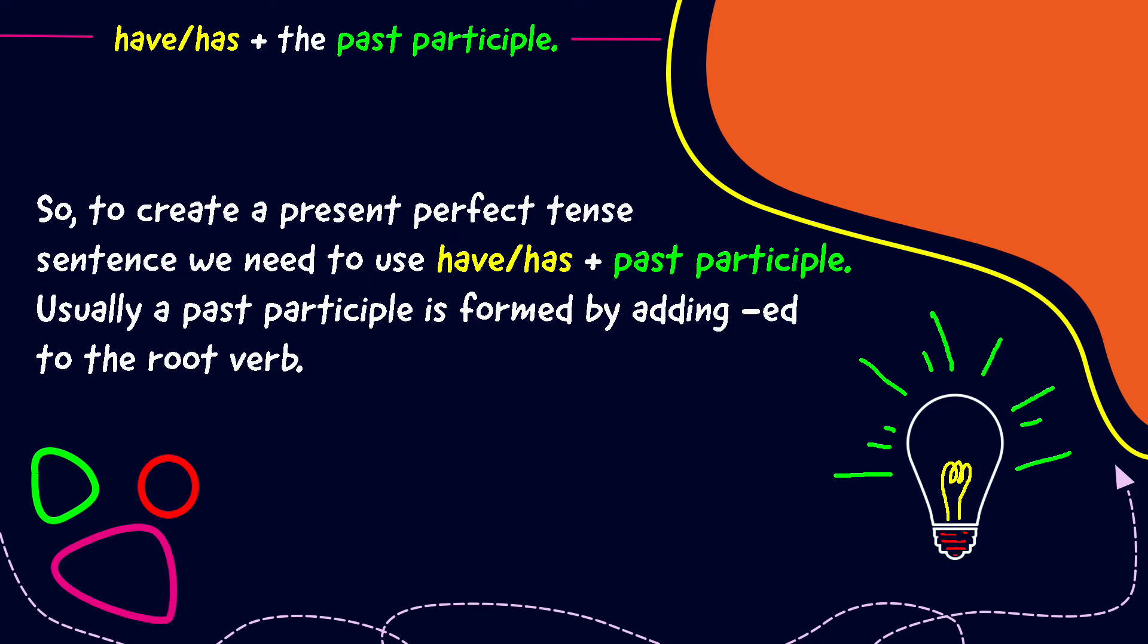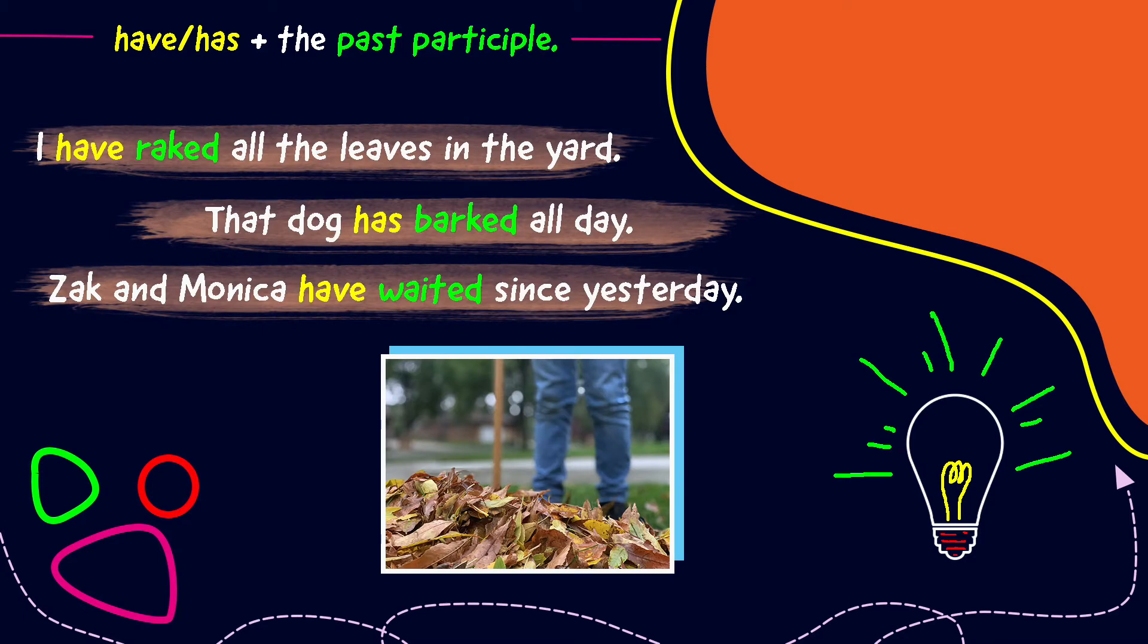So, to create a present perfect tense sentence, we need to use have or has plus a past participle. Usually a past participle is formed by adding ed to the root verb. Here are some samples using ed added to the root verb to form a past participle.